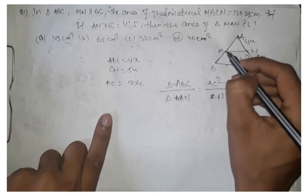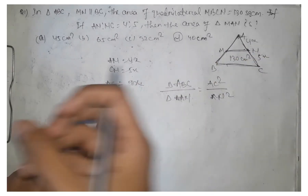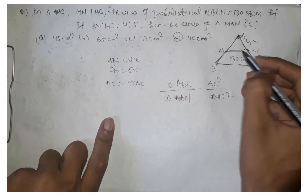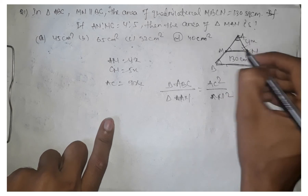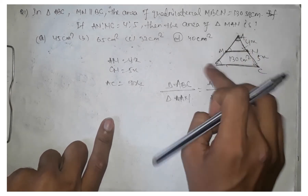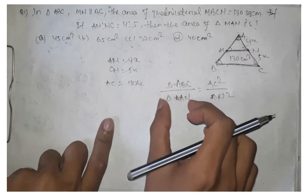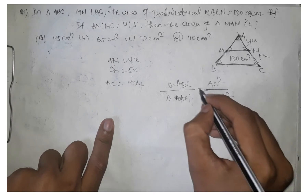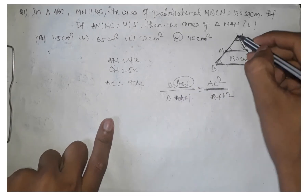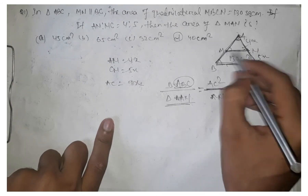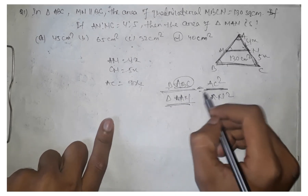I am saying this because the small triangle AMN and the big triangle ABC are similar triangles. We know this because MN is parallel to BC, which means the corresponding angles are equal, and angle A is common to both triangles. That means triangle AMN and triangle ABC are similar. In similar triangles, the ratio of their areas equals the ratio of the squares of their corresponding sides. So the area of ABC divided by area of AMN equals AC square by AN square.